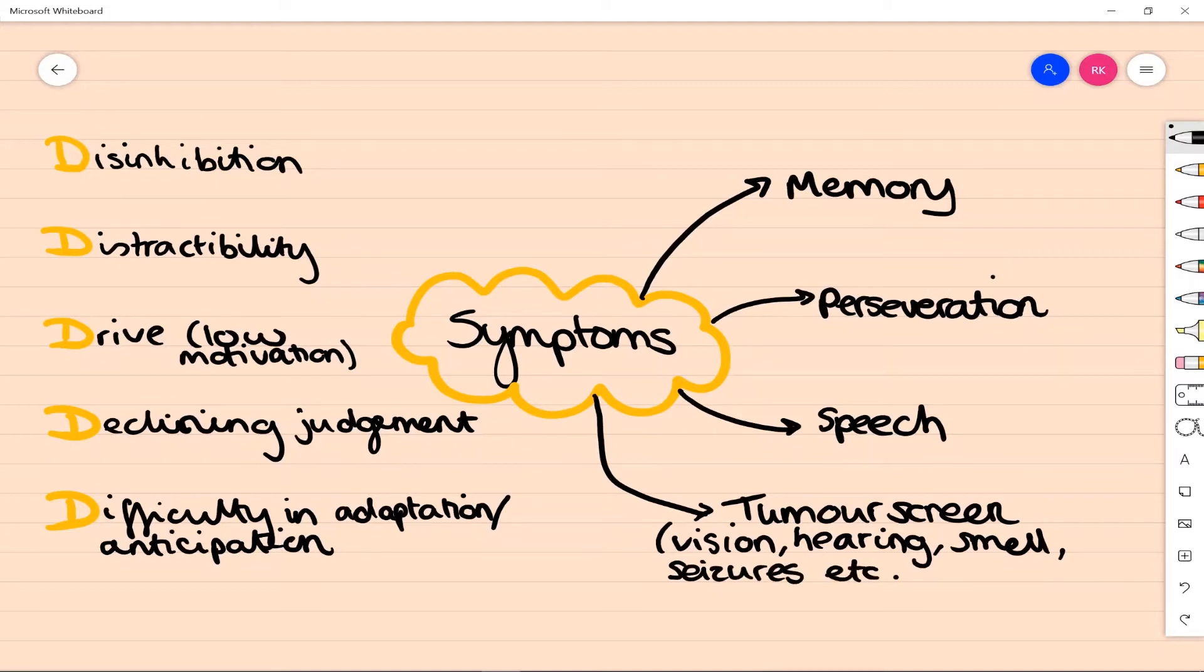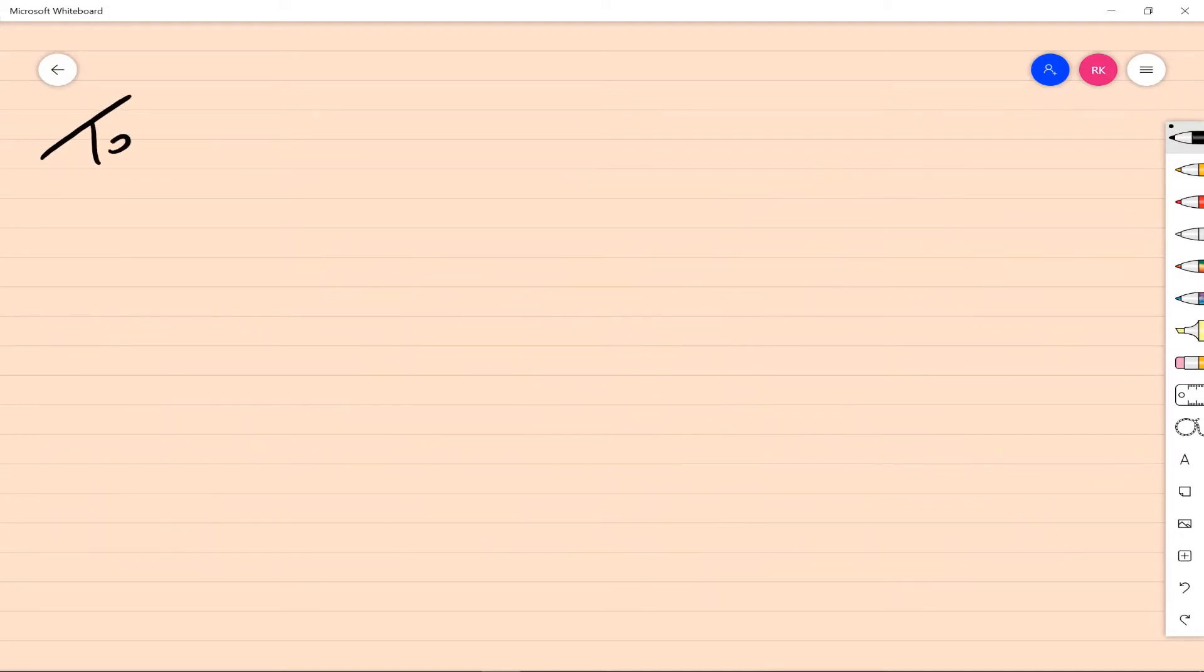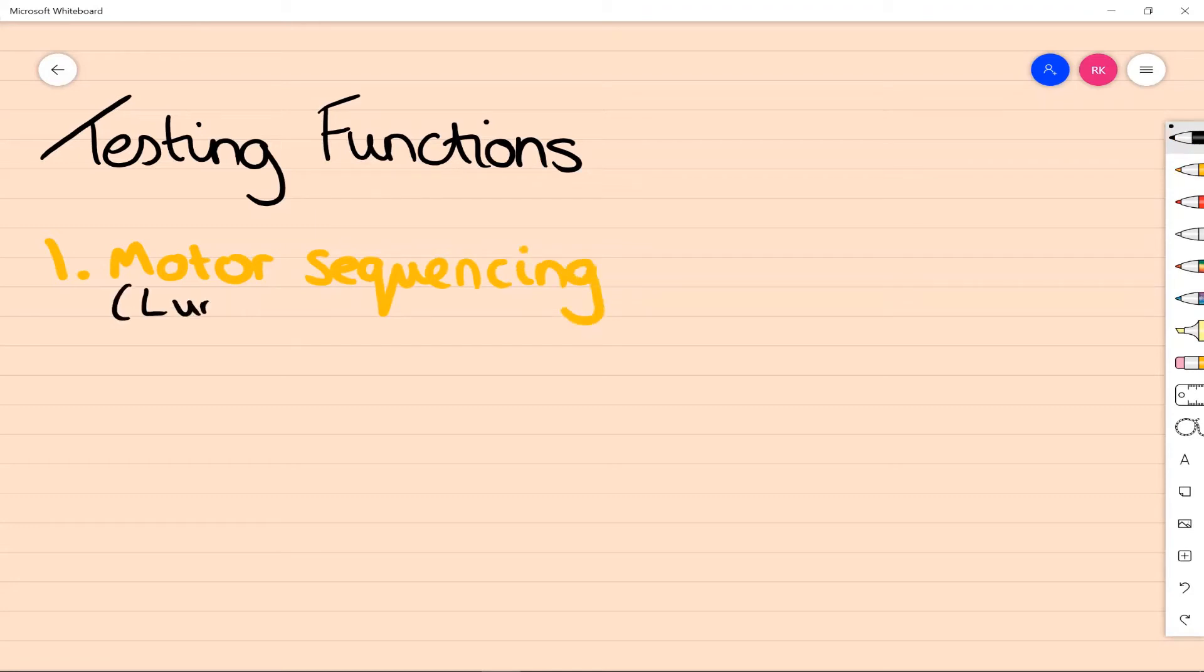We can test frontal lobe function in lots of different ways and we'll go through a few of the key ones here. To start with, you could look at motor sequencing. To do this, what you would do is take your own hand and put it into a fist, then a palm, then the side of the hand, and tap each on the side: fist, palm, side, fist, palm, side. Then you demo that five times to the person that you're assessing.